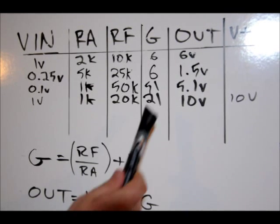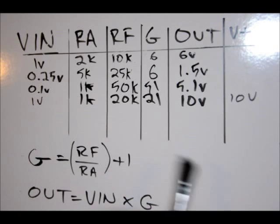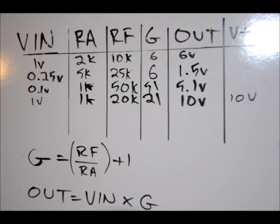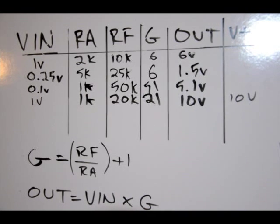So again, because 21 times 1 volt is 21 volts, but we only have 10 volts power supplying the circuit, we would see 10 volts at the output or just under 10 volts. So let's actually go to the lab section.